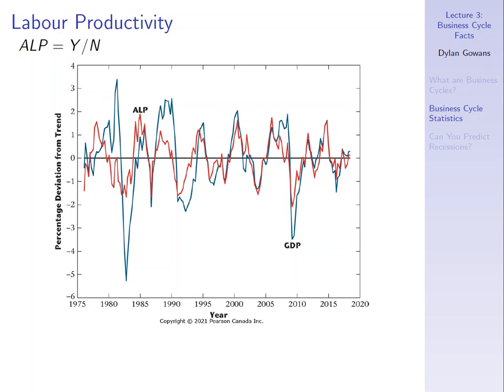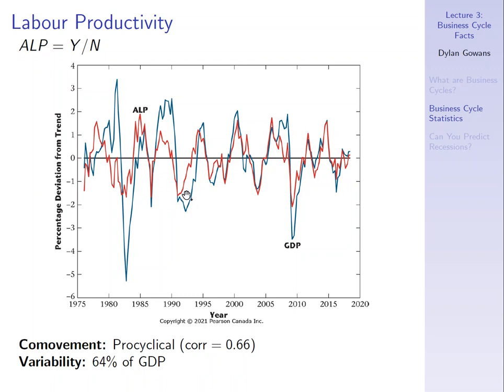The last variable is average labor productivity (ALP), defined as GDP divided by the number of workers — or hours of employment — in the economy. ALP varies with the cycle: it is pro-cyclical with a fairly high correlation coefficient of 0.66. When average labor productivity is high, so is GDP, and vice versa. It is slightly less variable than GDP and is coincident.